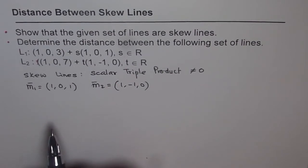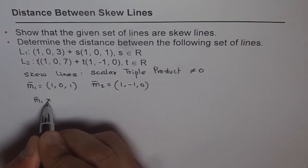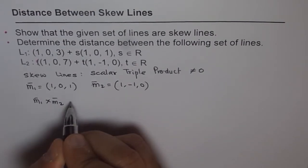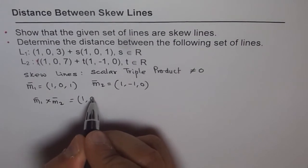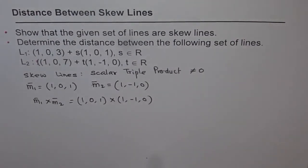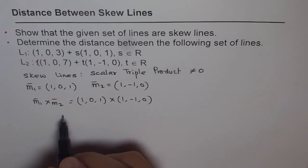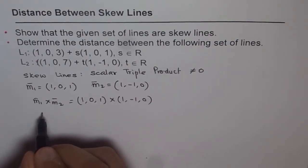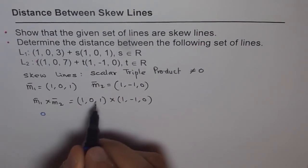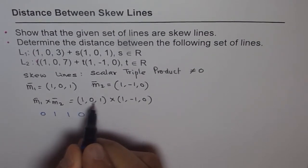We will figure out the scalar triple product for the given situation. Let us first find the cross product between M1 and M2. So M1 cross M2 is: (1, 0, 1) cross (1, −1, 0). The strategy we've adopted in these videos is to start with the center number and write it first. So we write 0 first, then all the numbers: 0, 1, 0, 1 and 0, 1, 1, 0 — giving us the first set of numbers.